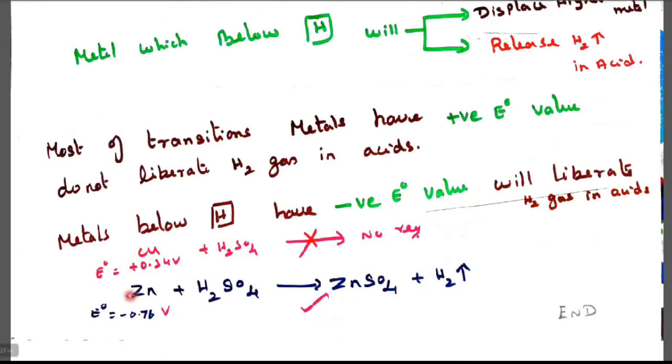Whereas zinc with minus 0.76 voltage with sulfuric acid easily liberated the hydrogen gas. So H₂ is H₂SO₄ plus hydrogen. This is a lower down metal of hydrogen. So easily liberate hydrogen gas from acid. Higher up metal cannot liberate hydrogen gas from the acid. Thanks for watching students.